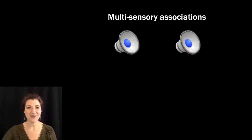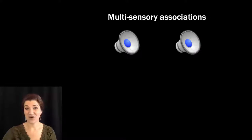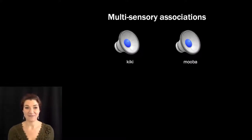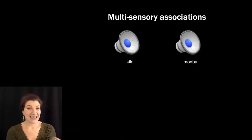Let's use another example. How about this sound? Versus this one. So most people would say that the flute is kiki. Kiki is maybe sharp and sour and high-pitched and staccato.